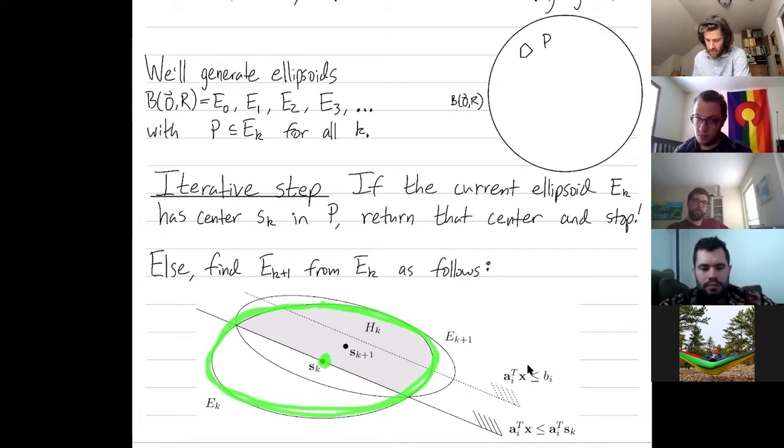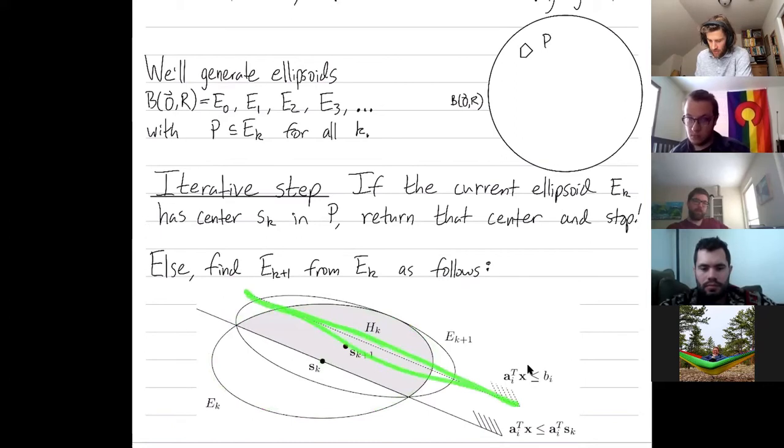If not, there's some constraint separating it from the feasible region. So this is maybe some boundary segment of the feasible region. What we do is we take that constraint and we translate it to actually go through the point. So this might be part of the boundary of our polytope P, our feasible region. But we use the direction of that constraint and just pass it through the center.